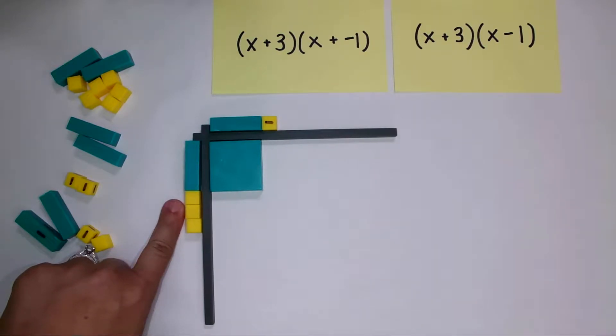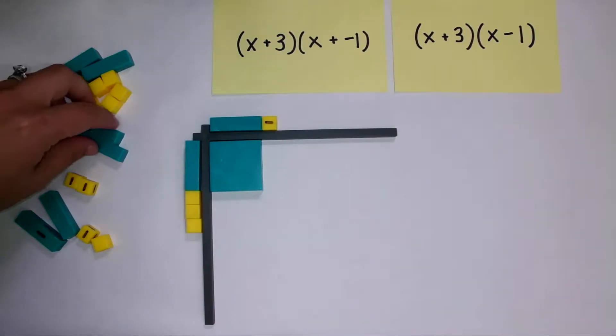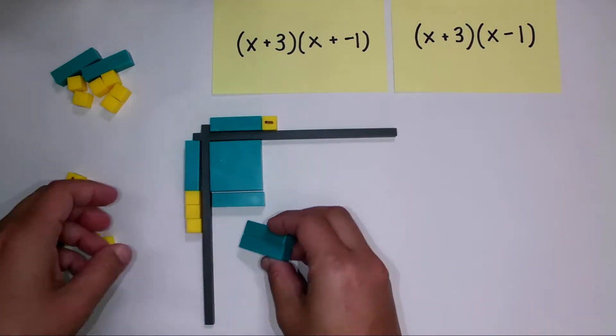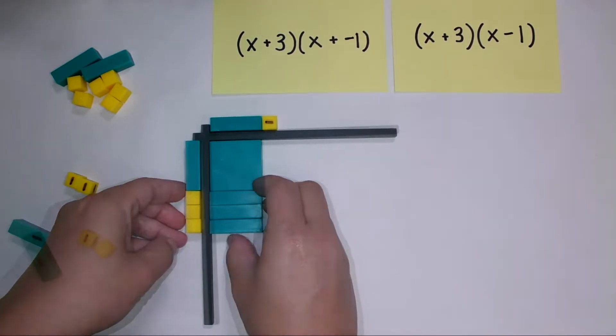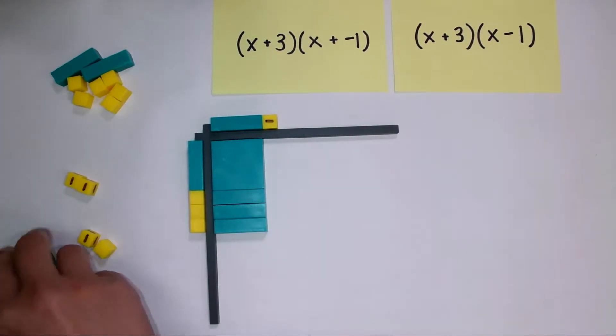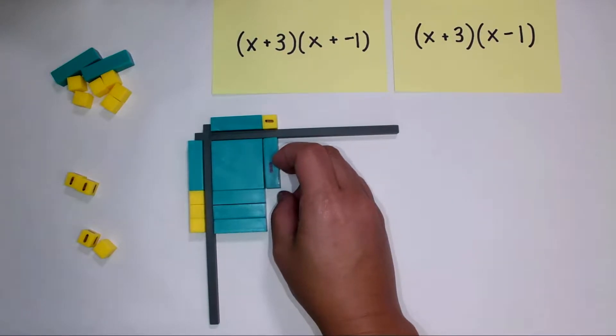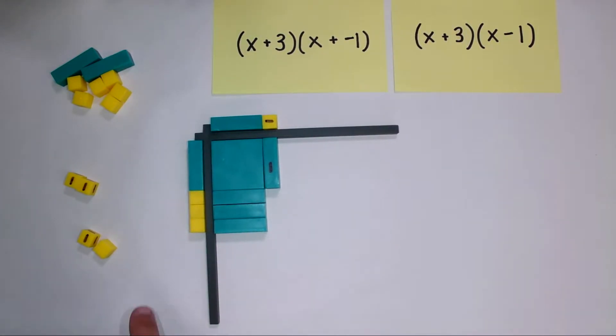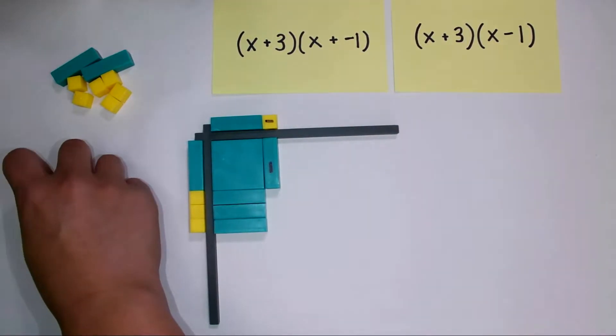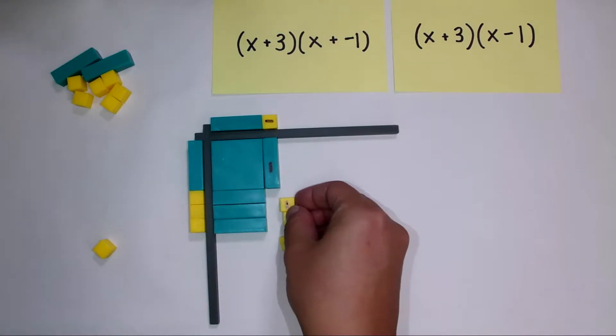So I'm going to do 3 times x which is 3x. Next I'm going to multiply x times negative 1 which is negative 1x or negative x. And then finally I'm going to multiply these three integer constants by this negative 1 integer constant. And that's going to give me negative 3.